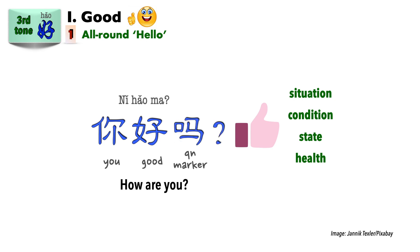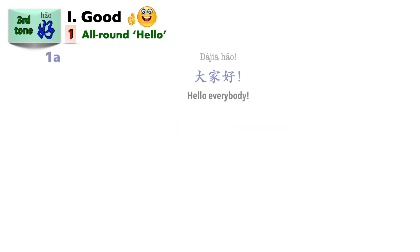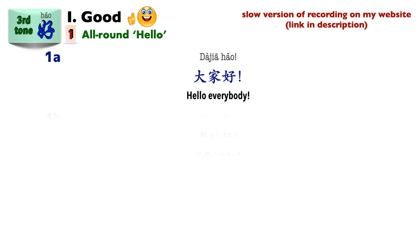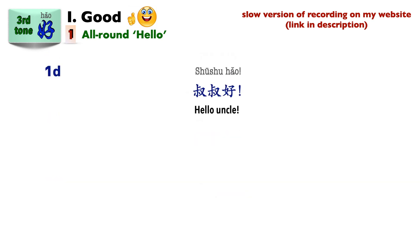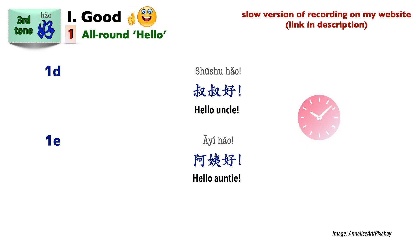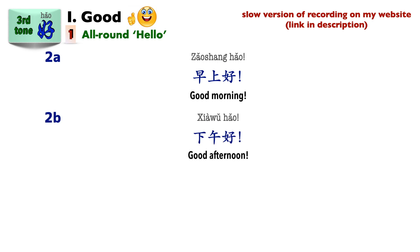你好吗? means 'How are you?' Take away the question marker 吗, and you can look at the greeting 你好 as a shortened statement of 'I hope you're fine.' What if you want to greet someone else? Simply change the subject 你 to whoever it is: 大家好, 老师好, 同学们好, 叔叔好, 阿姨好. We can also replace the person with a time word: 早上好, 下午好, 晚上好.